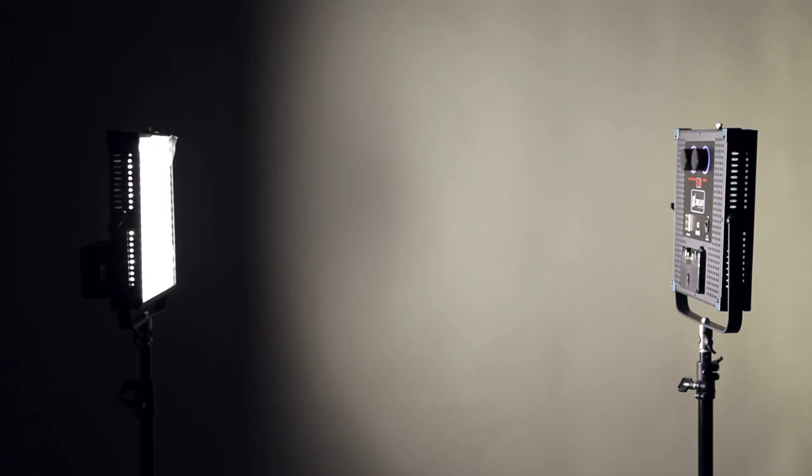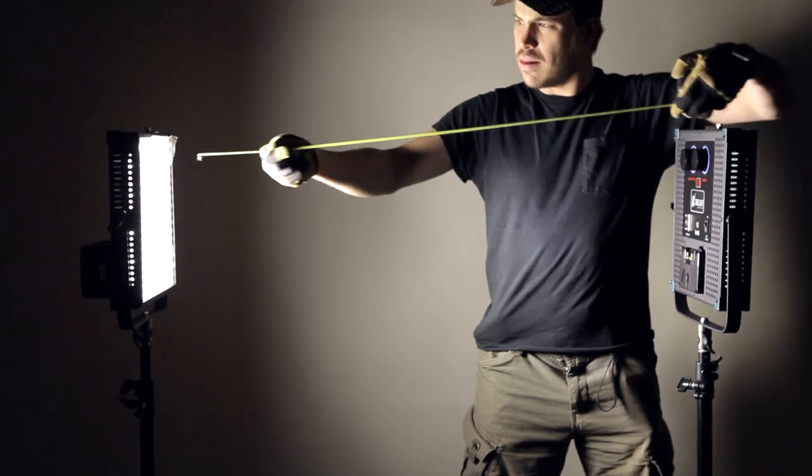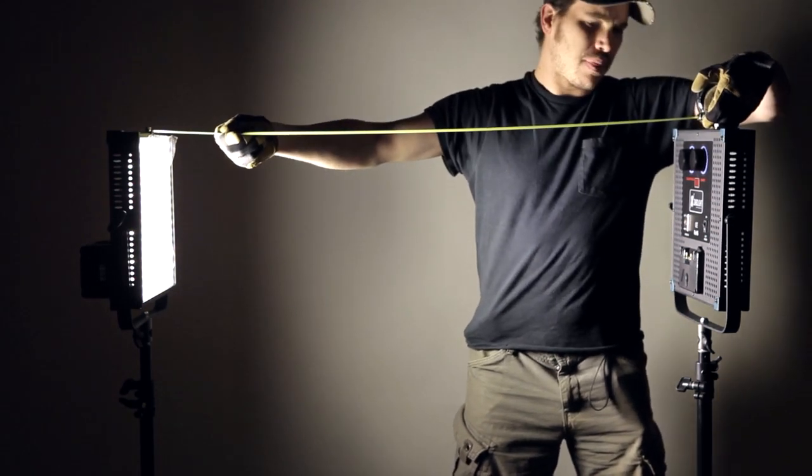This is part two. We now have the Z1, the 1x1 fixture, lighting our subject, which is a Z1 and sensor. So we're going to keep the exact same distance, 3.5 feet from the middle of the light to the subject.